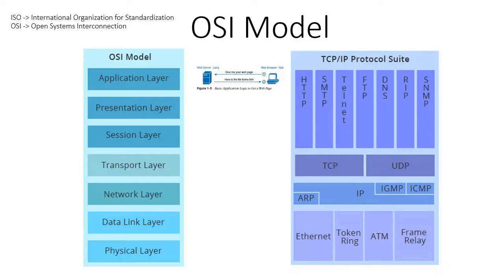Hello all. In this class we are going to discuss about the OSI model. In the earlier days, every vendor used to create their own networking protocol standards that work only within their vendor product. For example, Cisco discovered something called the Cisco Discovery Protocol that works only within Cisco devices. Similar is the case with IBM.